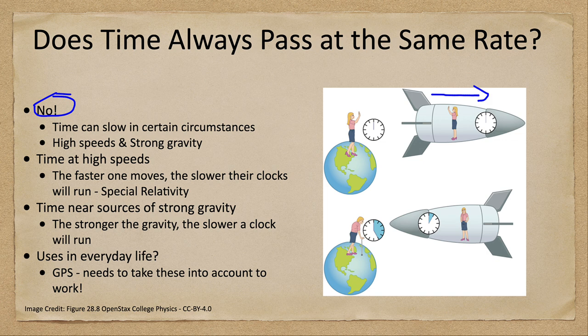Her internal clocks, all of the clocks on the spacecraft, anything traveling at that high speed would have its time slow down. So under special relativity, the faster one moves, the slower their clocks will run.